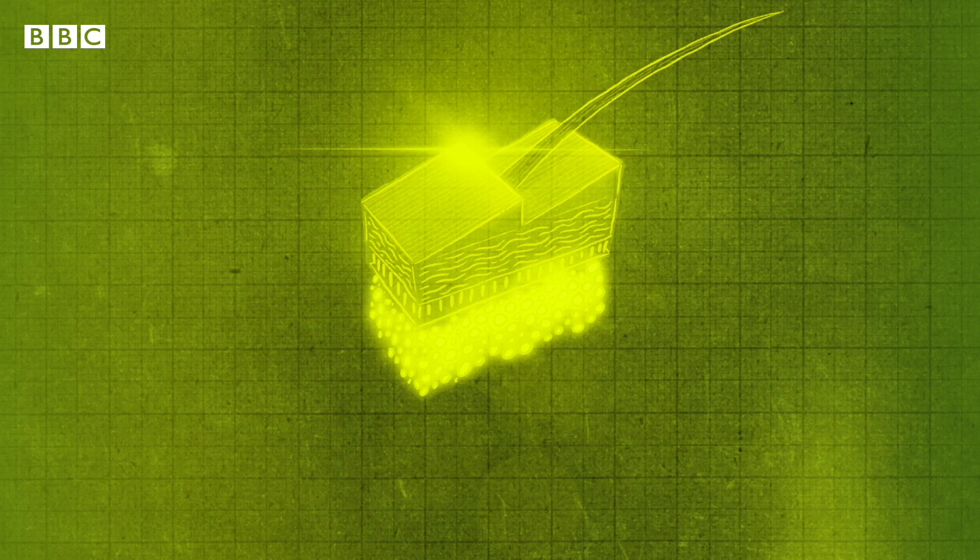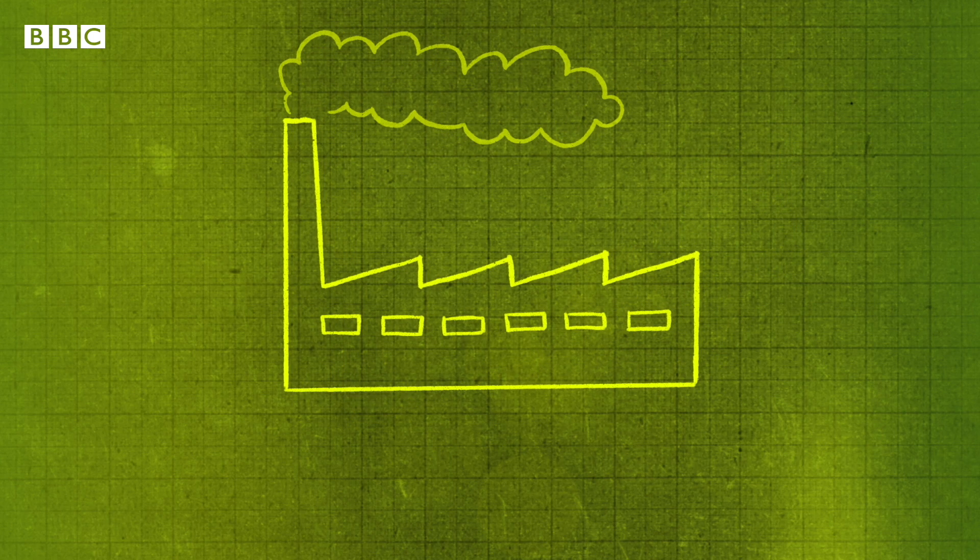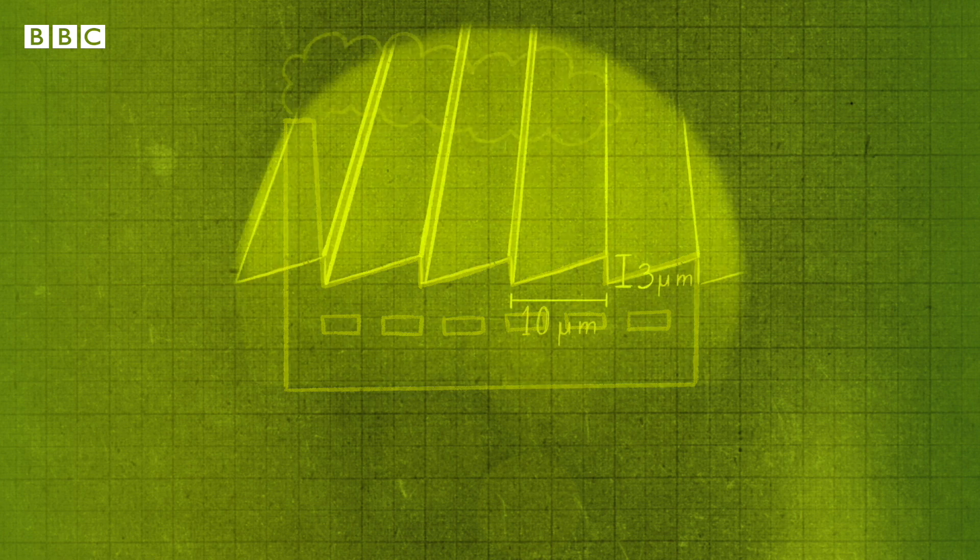The tips of the scales protrude and have a tilted slope like a factory roof. The team wondered if they could emulate this to make LED lights shine brighter.